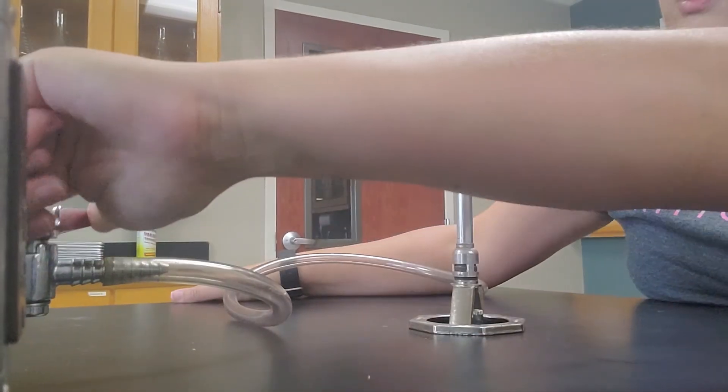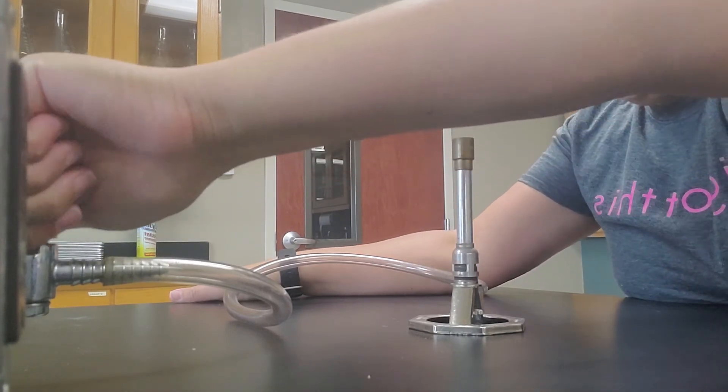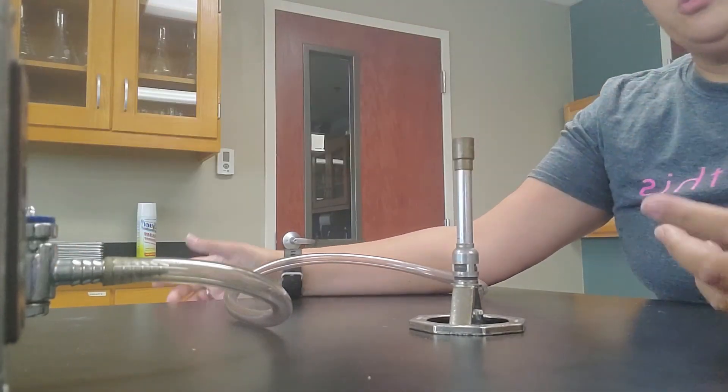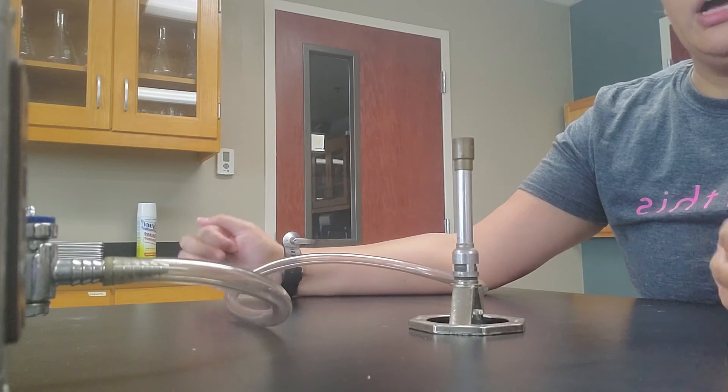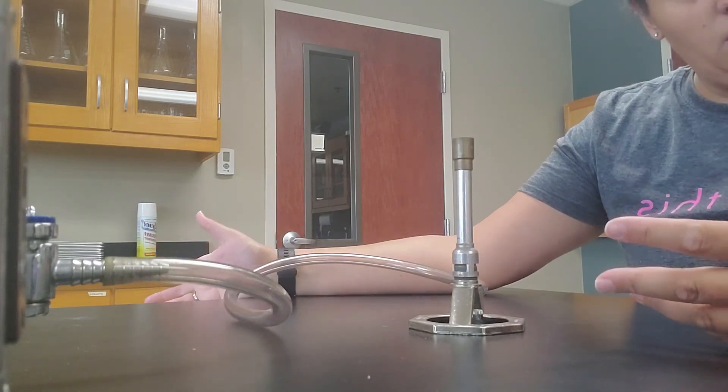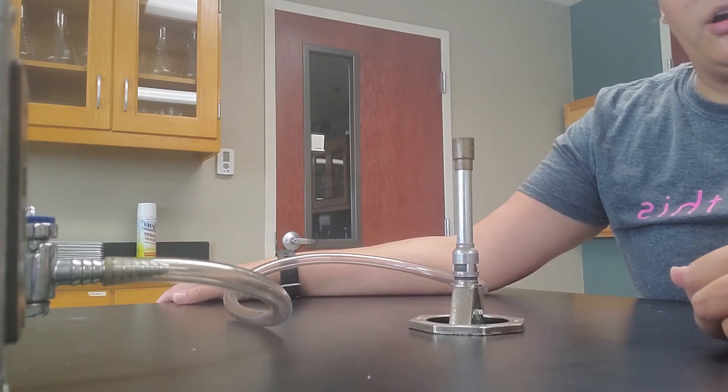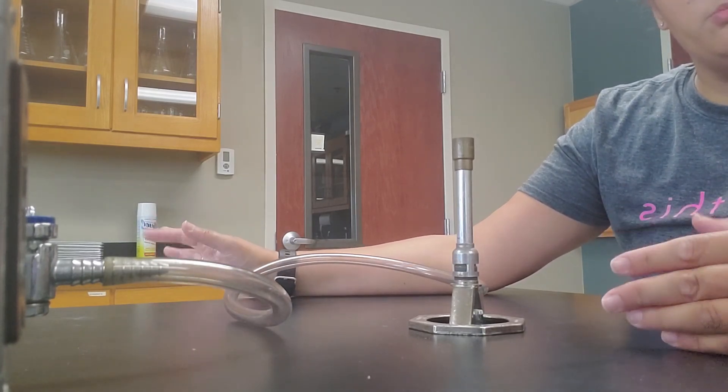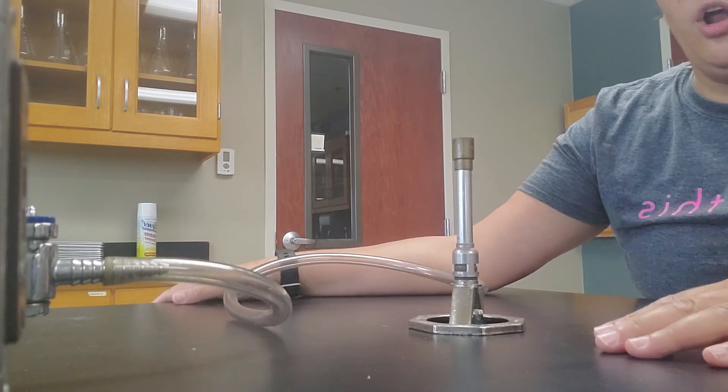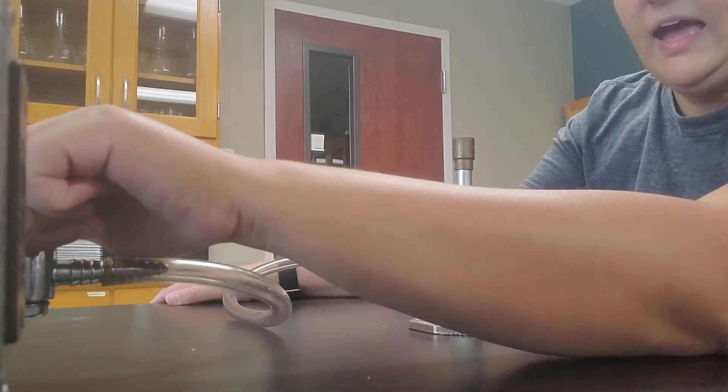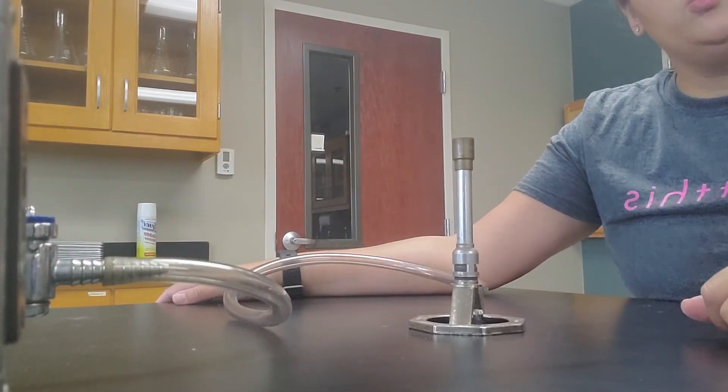When you're done with the Bunsen burner, turn off the gas. That's always kind of a big deal. Turn that off. Whenever you're using these, you'll notice my hair is not in my way. I've put it up so that way I don't accidentally catch my hair on fire. I've had students almost do that before. So just kind of be aware of the Bunsen burner. When you're not using the Bunsen burner, if you're done with it, turn it off. It's just a good practice. Make sure that gas is turned off. And then you are set to go.